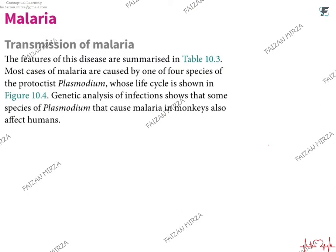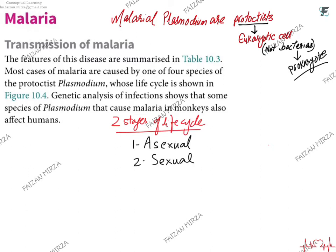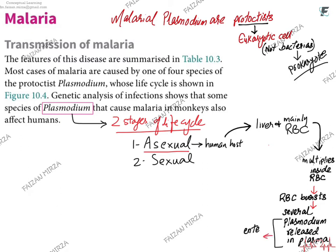What is happening in malaria? The life cycle of the malarial plasmodium is important here. This is not caused by bacteria — it is a plasmodium, a protoctist, a unicellular eukaryote. There are two stages: an asexual stage and a sexual stage. The asexual stages occur in the human host, mainly in the liver and red blood cells. The pathogen multiplies inside the red blood cell, the red blood cell bursts, several new plasmodiums are released into the plasma, and they enter more red blood cells — repeating the cycle. Hemolysis is the term for the bursting of the red blood cell.